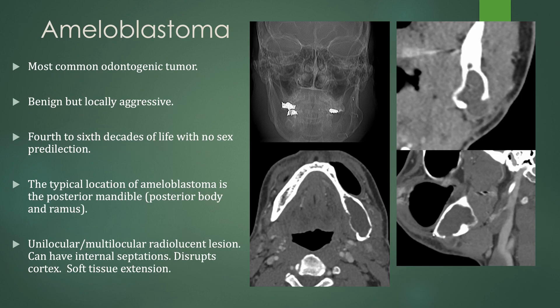An ameloblastoma is the most common odontogenic tumor. They are benign but locally aggressive, seen in the fourth to sixth decades of life with no gender or sex predilection. The typical location is the posterior mandible — the posterior body and the ramus. These are unilocular or multilocular radiolucent lesions with some internal septations. They disrupt the cortex and can have soft tissue extension. Notice these look a lot like odontogenic keratocysts, but in this case there is no associated tooth. It is a lytic expansile lesion with scalloping of the bone and some cortical breakthrough with a soft tissue component.